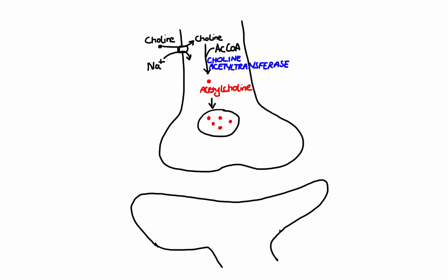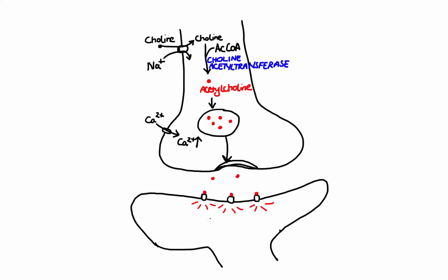In the third step, the action potential causes voltage-sensitive calcium channels to open, allowing calcium to enter the axon. This in turn leads to the fusion of the vesicle with the membrane and release of acetylcholine from the terminal. In the fourth step, acetylcholine binds to postsynaptic receptors which leads to a cholinergic response. Acetylcholine also binds to presynaptic receptors and inhibits the release of more acetylcholine, serving as a negative feedback loop.